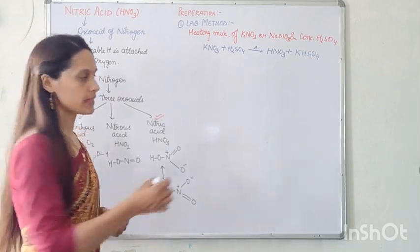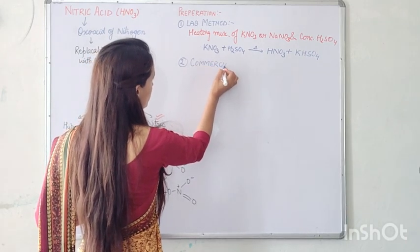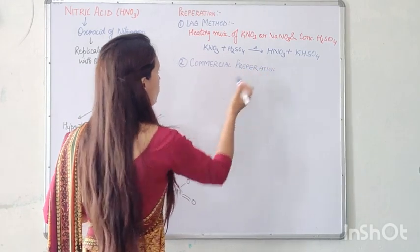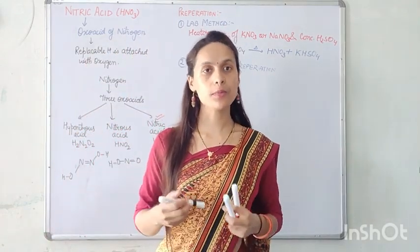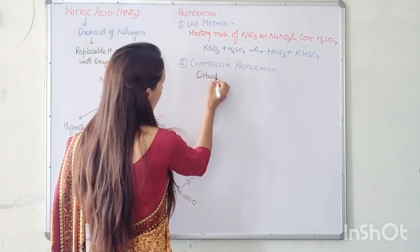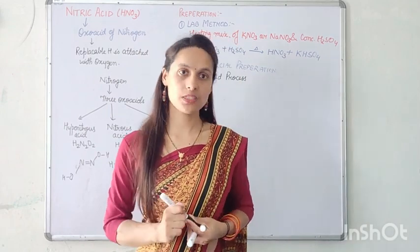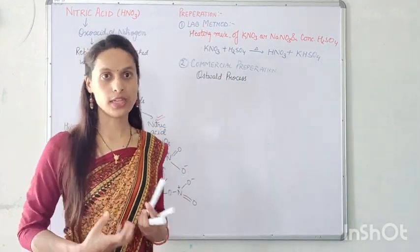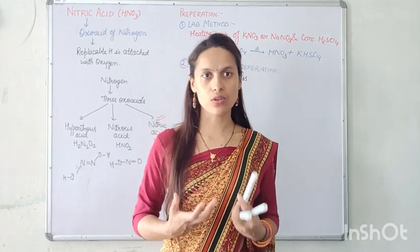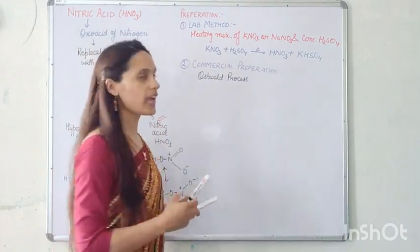The second method is commercial preparation. Commercially, HNO3 can be prepared by the Ostwald process. In our previous videos we mentioned the first step of this process many times, like in the formation of NO (nitric oxide) from the reaction of ammonia with excess of air. In the Ostwald process, we have three steps.